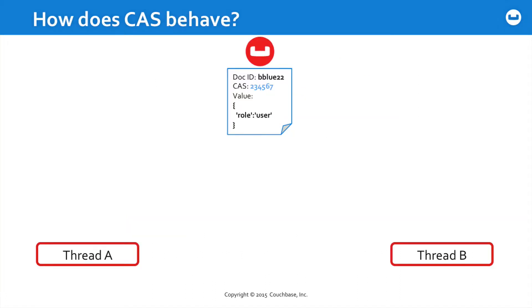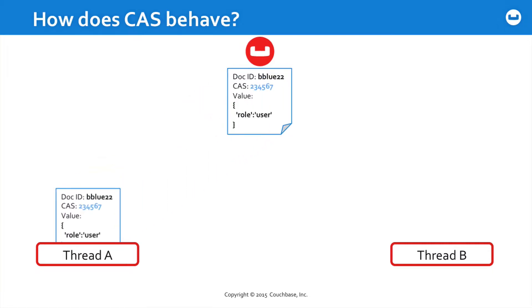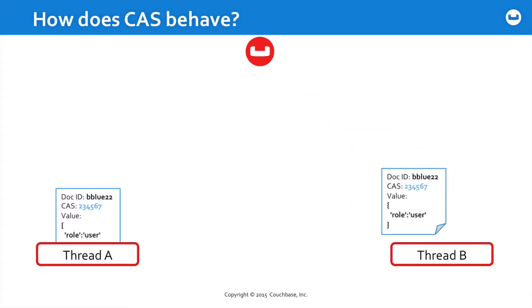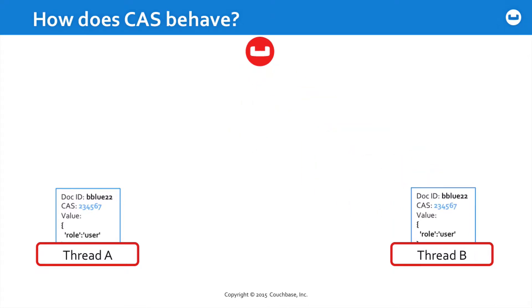Let's visualize how this behaves. Imagine you have a system with two threads — thread A and thread B. Thread A gets a particular document with a particular document ID and a CAS value. Thread B also gets that document. Note, they still have the same CAS value.